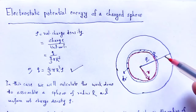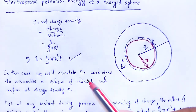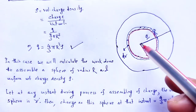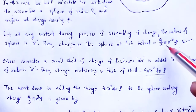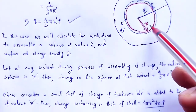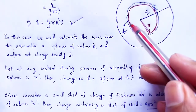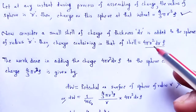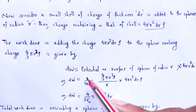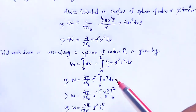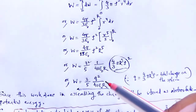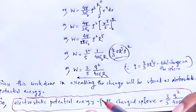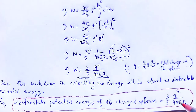With the help of this video lecture we understand how to calculate electrostatic potential energy of a charged sphere. We take the sphere of radius R, find the charge at any instant, consider a small shell of thickness dr, calculate the small work done, then integrate to get the total work done, which is the electrostatic potential energy: (3/5)·q²/(4πε₀R). Let me wind up this session, thank you.